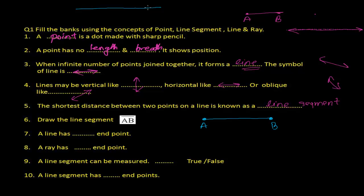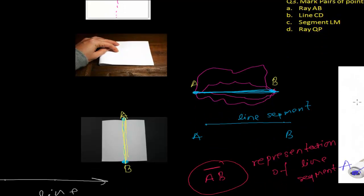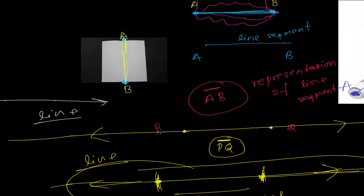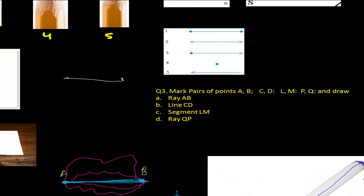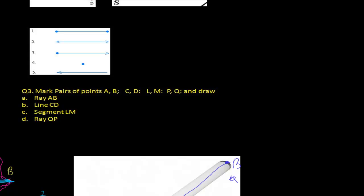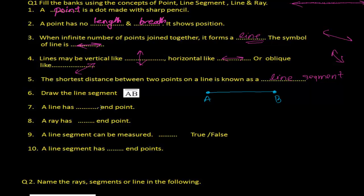A line has no endpoints. As we discussed in the previous video, if you keep extending line PQ on both sides, even countless generations from now it would never finish — it's infinite in length. So a line does not have endpoints.